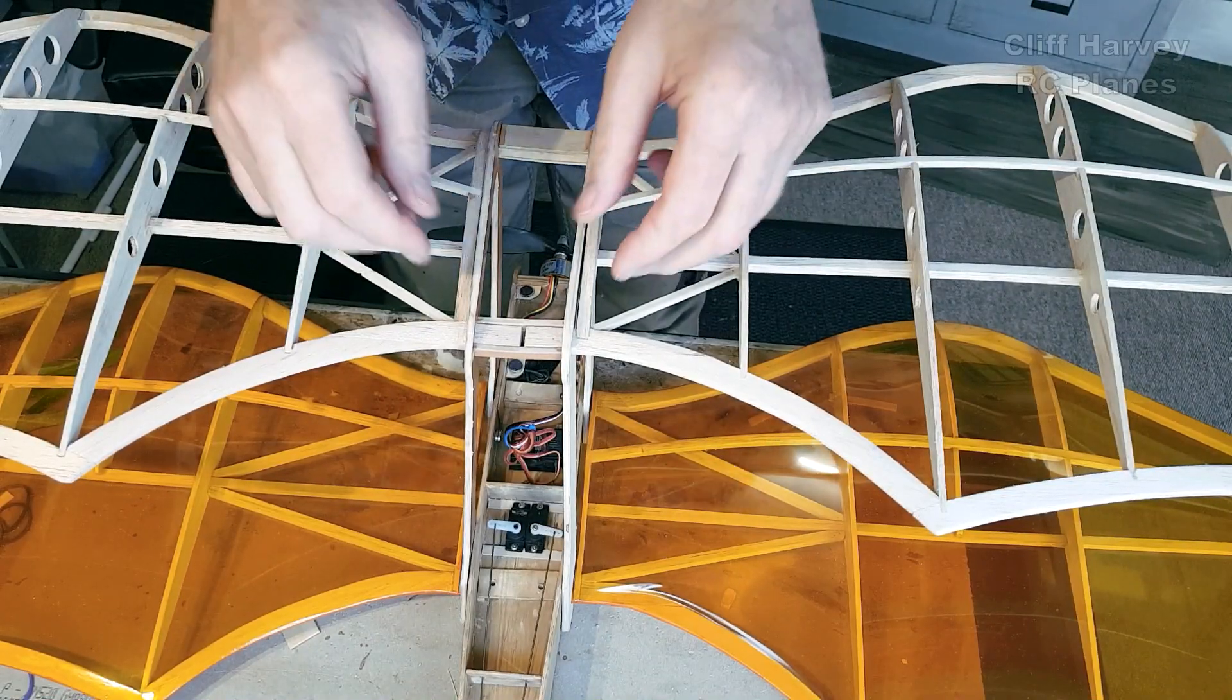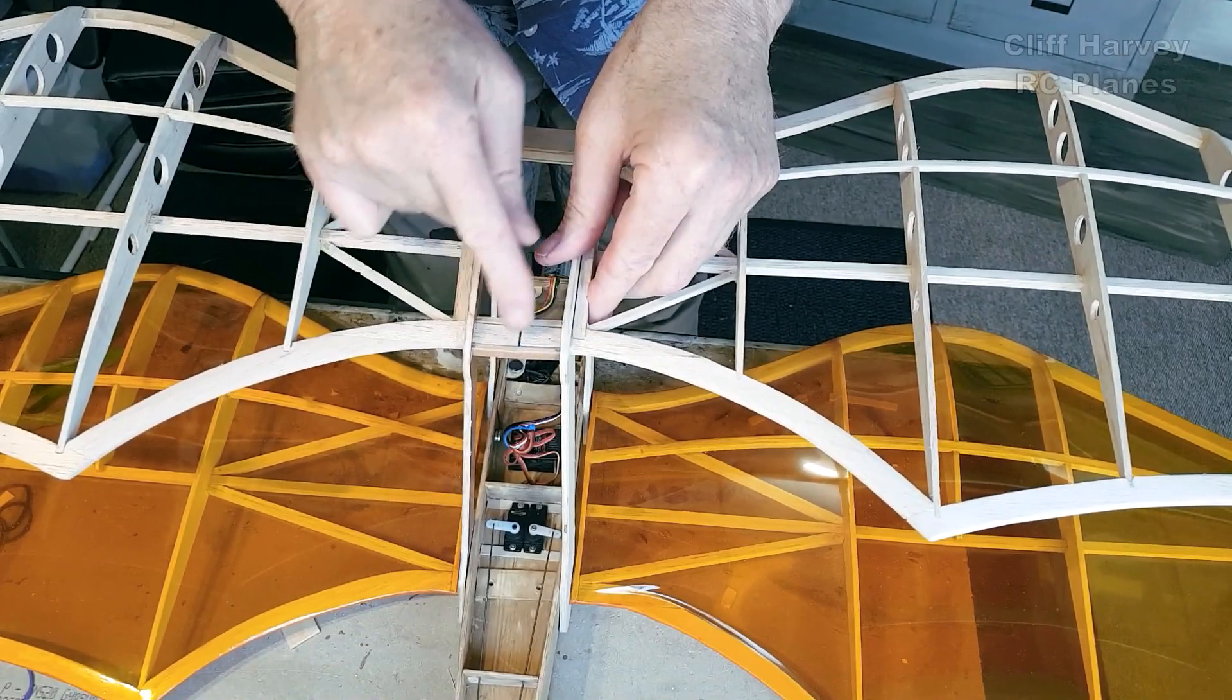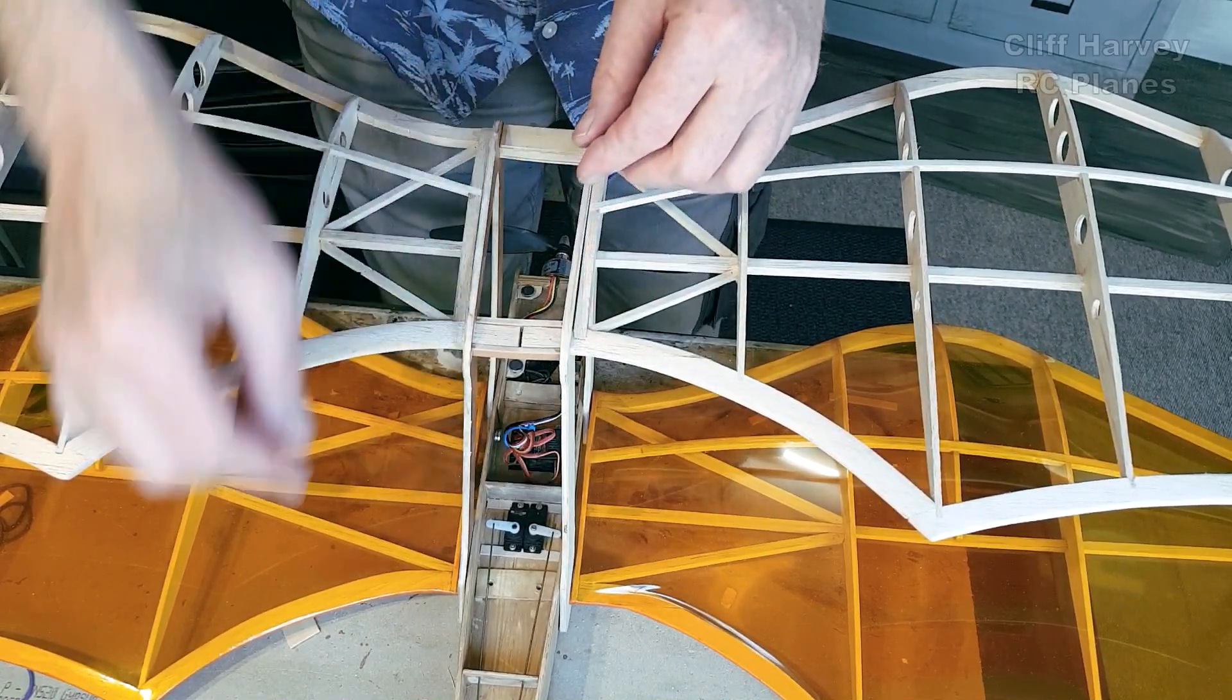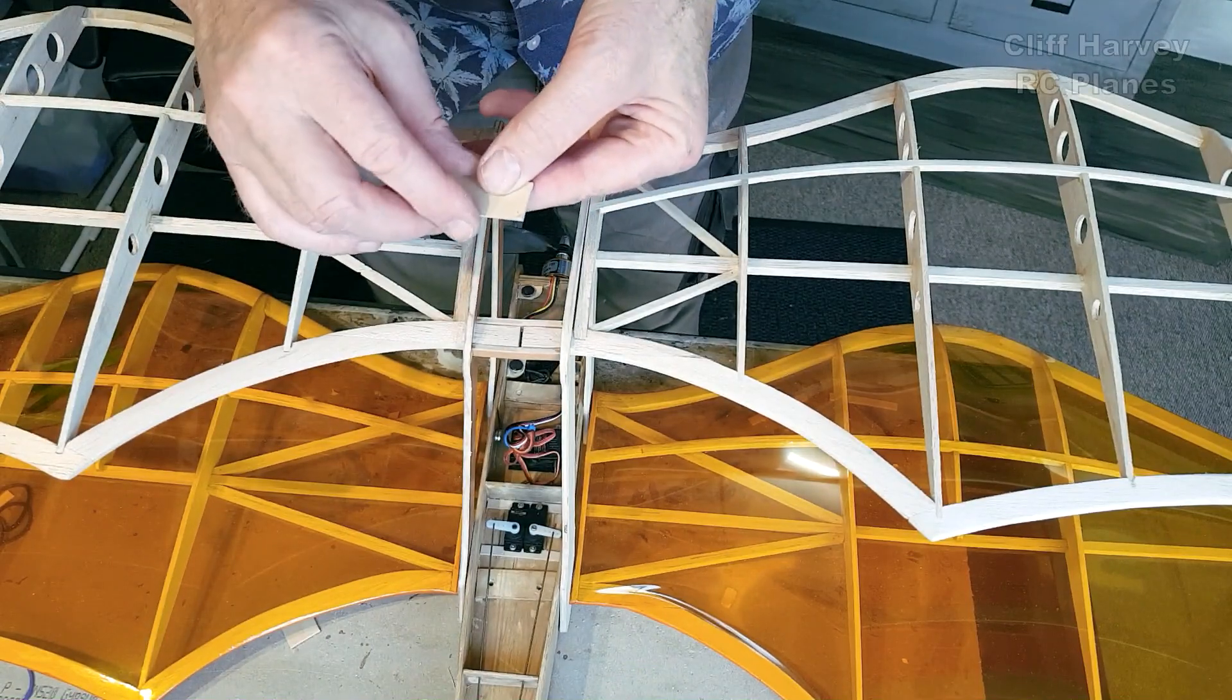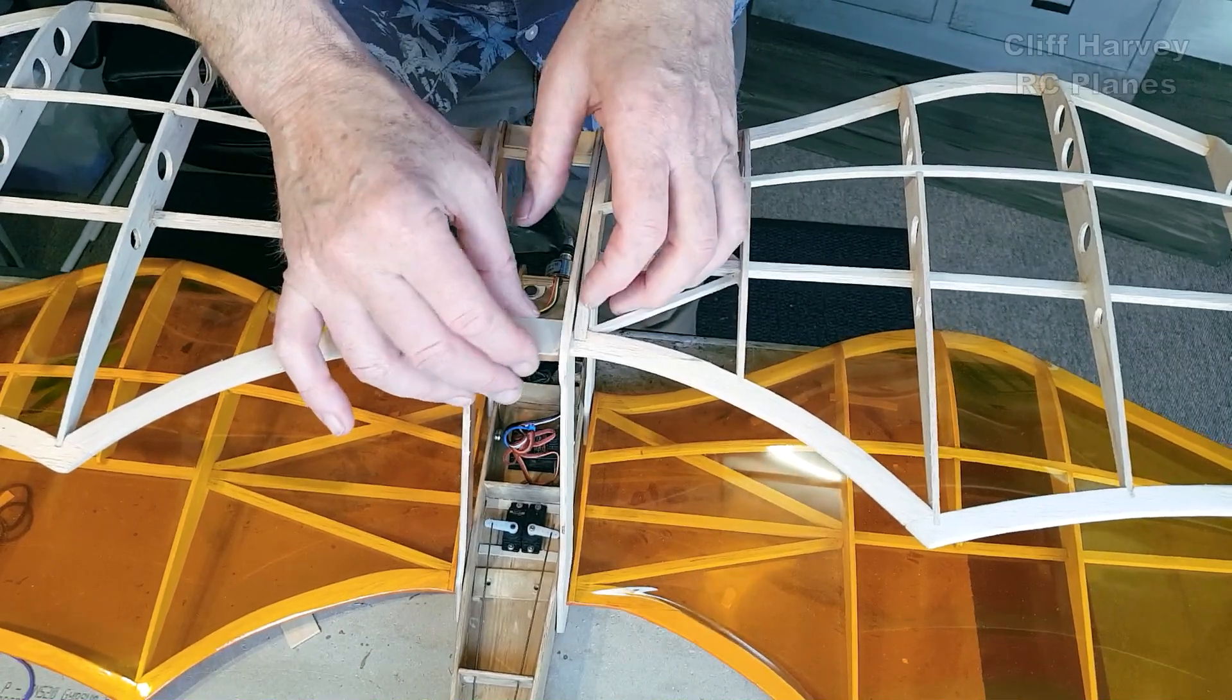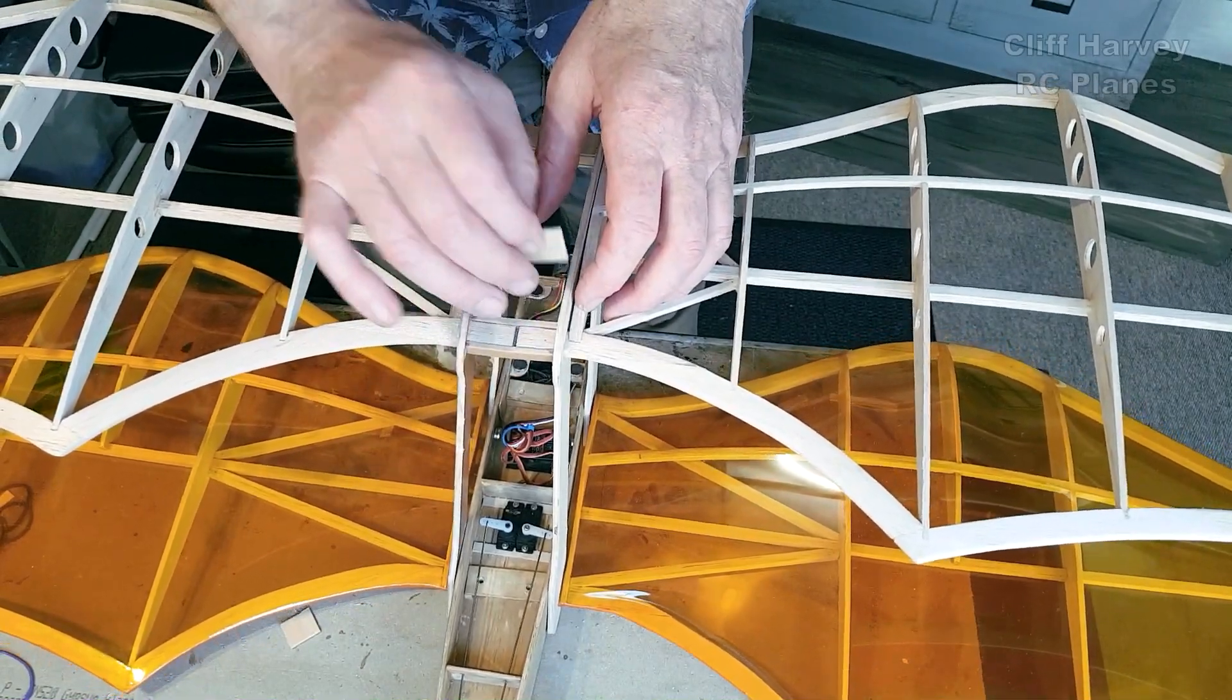Okay, what I've done then is I've glued in the little front and back. I've made it one eighth and I've just made some one sixteenth ply cap top and bottom to box it off.